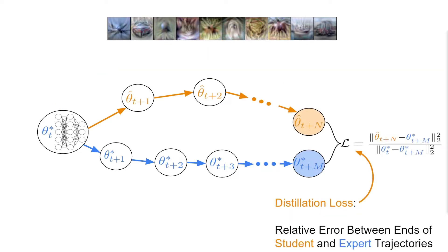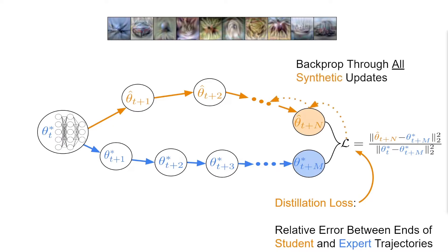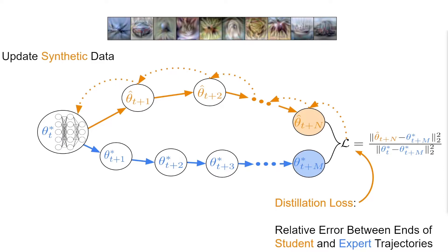Our distillation loss is then computed as the relative error in parameter space between the end of the student trajectory and a future point along the expert trajectory. This distillation loss is then backpropagated through all the student updates and used to update our synthetic images.